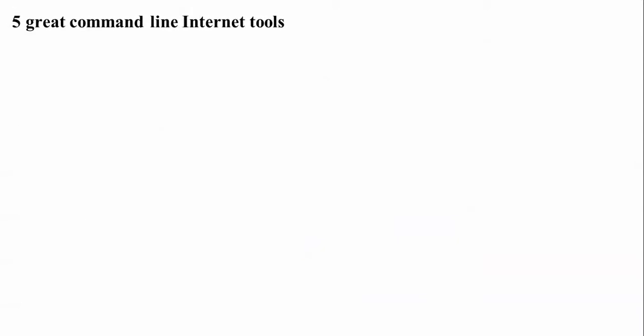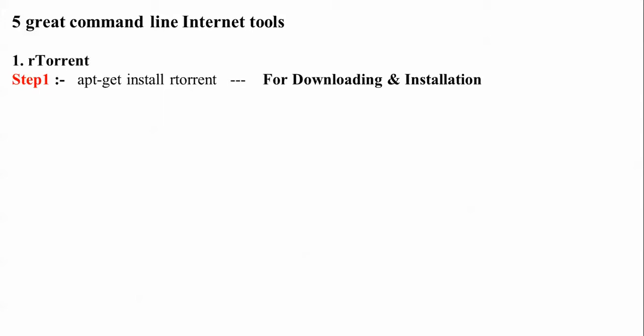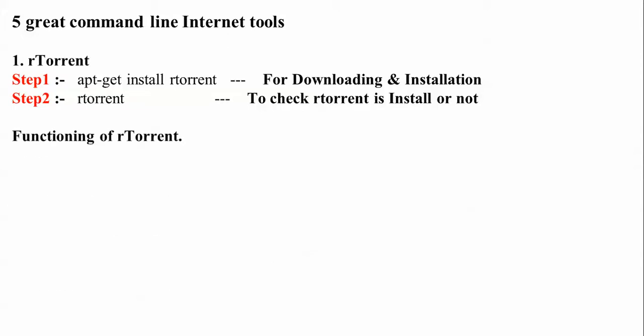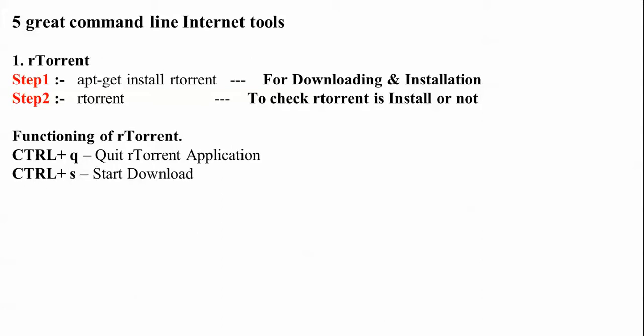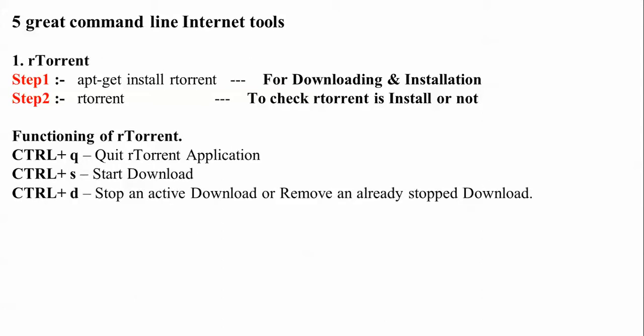These are five great common tools for internet. First is rtorrent. To install rtorrent, the command is apt-get install rtorrent. After downloading, it will be installed. This is the command to check whether rtorrent has been downloaded or not, and here is the functioning of rtorrent.